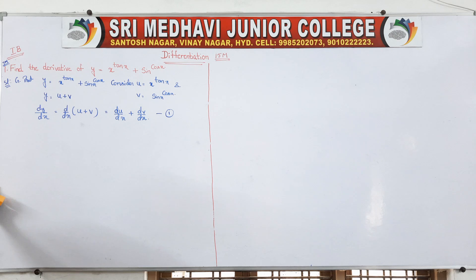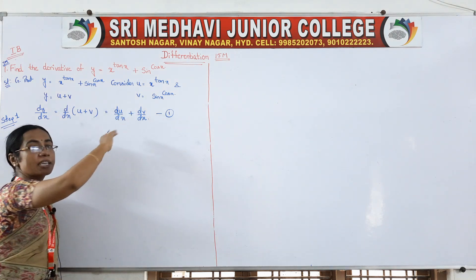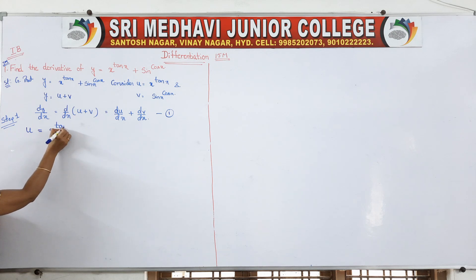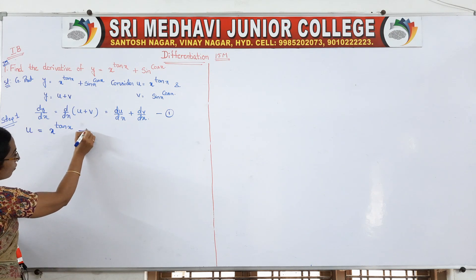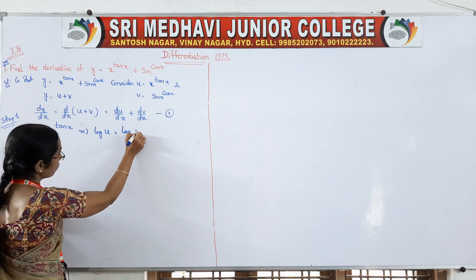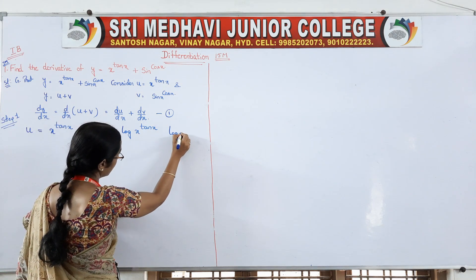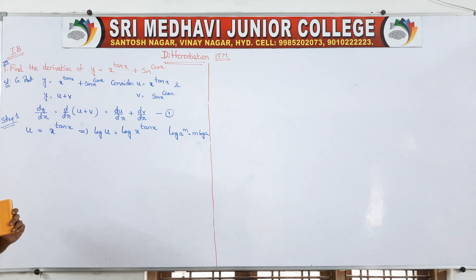Step 1: find du/dx. Take your u — u is equal to x to the power of tan x. Since the value is in terms of x and its power is also in terms of x, we go for the logarithmic method. Taking log on both sides: log u equals log of x to the power of tan x. There is one formula in logarithm: log a to the power of m equals m log a. So log x to the power of tan x becomes tan x into log x.